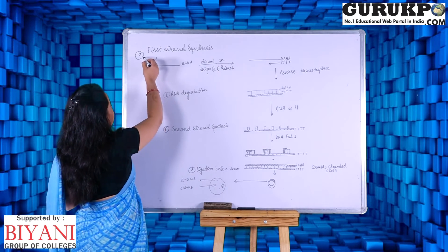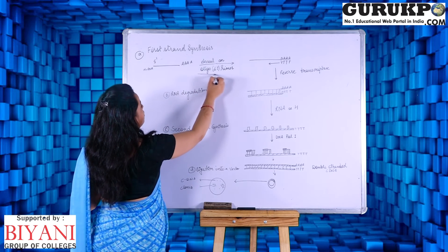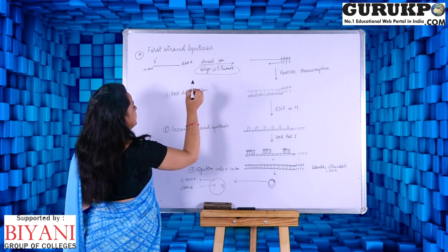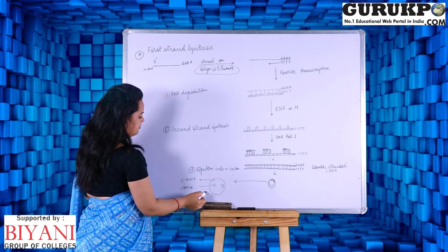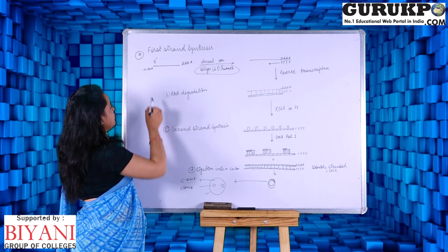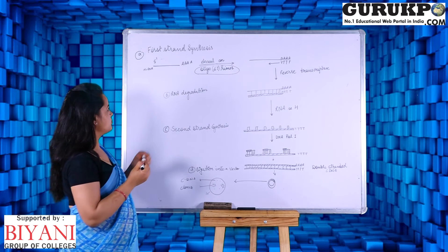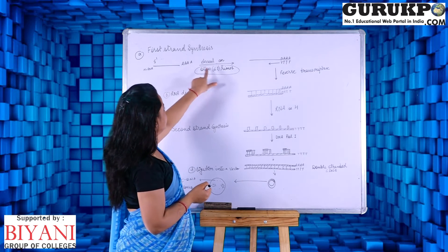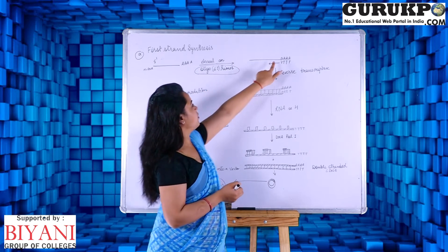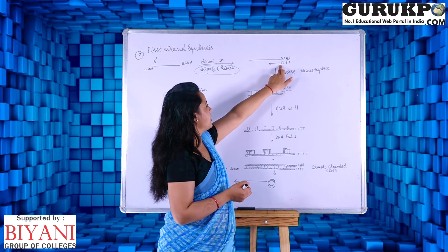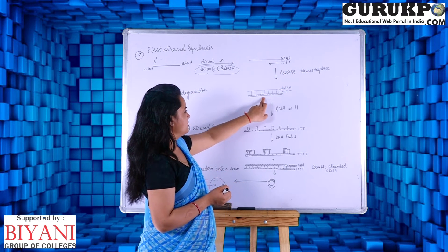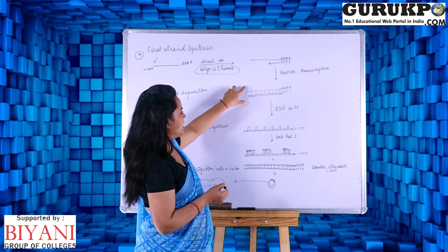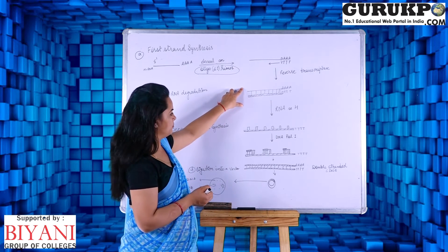We can see if we have an oligo-dT primer then we can create a cDNA library very easily. First of all, if we have the messenger RNA sequence with poly-A tail, we just anneal the dT primer with this poly-A tail and this primer will act to form a complementary strand of the existing messenger RNA strand.